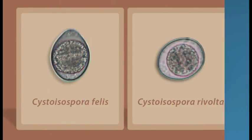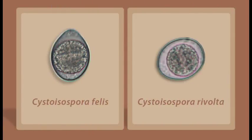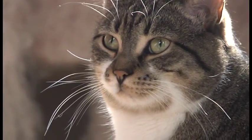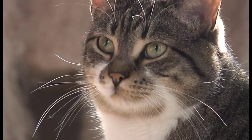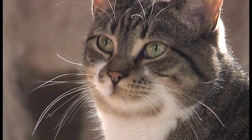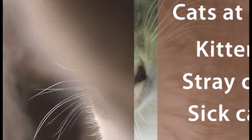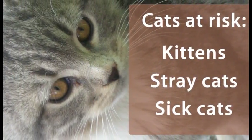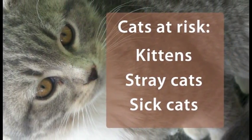Cystoisospora felis and Cystoisospora rivolta are two species of coccidial parasites that are capable of infecting the gastrointestinal tract of cats. In the majority of cats, this parasite doesn't appear to cause clinical disease. However, it can sometimes cause problems in kittens and stray cats, as well as cats suffering from concurrent bacterial and viral infections.